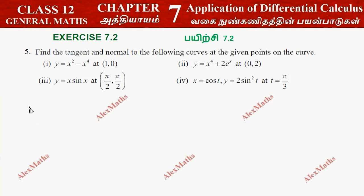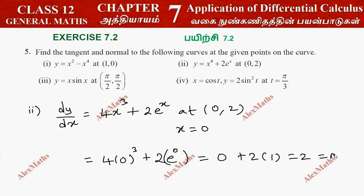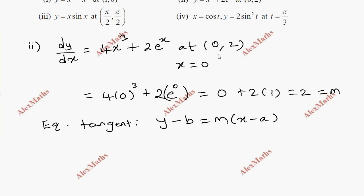Subdivision 2: y equals x⁴ plus 2eˣ. Differentiate: dy/dx equal to 4x³ plus 2eˣ. At point (0, 2), x value is 0. Substituting x = 0: 4 into 0 cubed plus 2e⁰ equals 2. So slope m = 2. Using formula y minus b equal to m into x minus a, substitute: y minus 2 equal to 2 into x minus 0. So y minus 2 equals 2x.